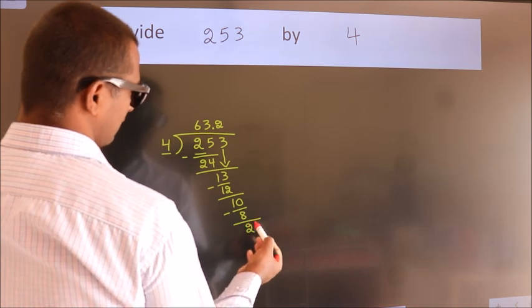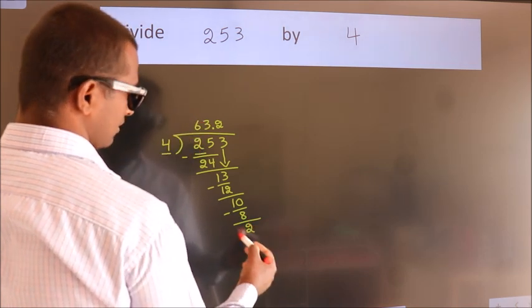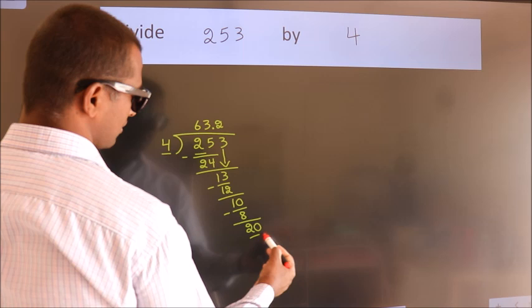After this, we already have the decimal. So directly take 0. So 20.